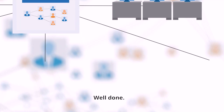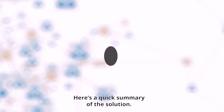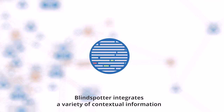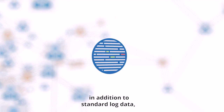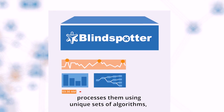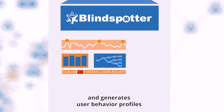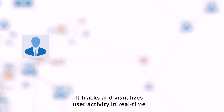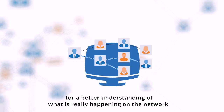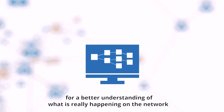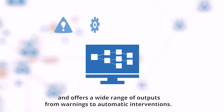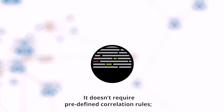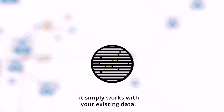Here's a quick summary of the solution. Blindspotter integrates a variety of contextual information in addition to standard log data, processes them using unique sets of algorithms, and generates user behavior profiles that are continually adjusted using machine learning. It tracks and visualizes user activity in real time for a better understanding of what is really happening on the network, and offers a wide range of outputs from warnings to automatic interventions. It doesn't require predefined correlation rules — it simply works with your existing data.